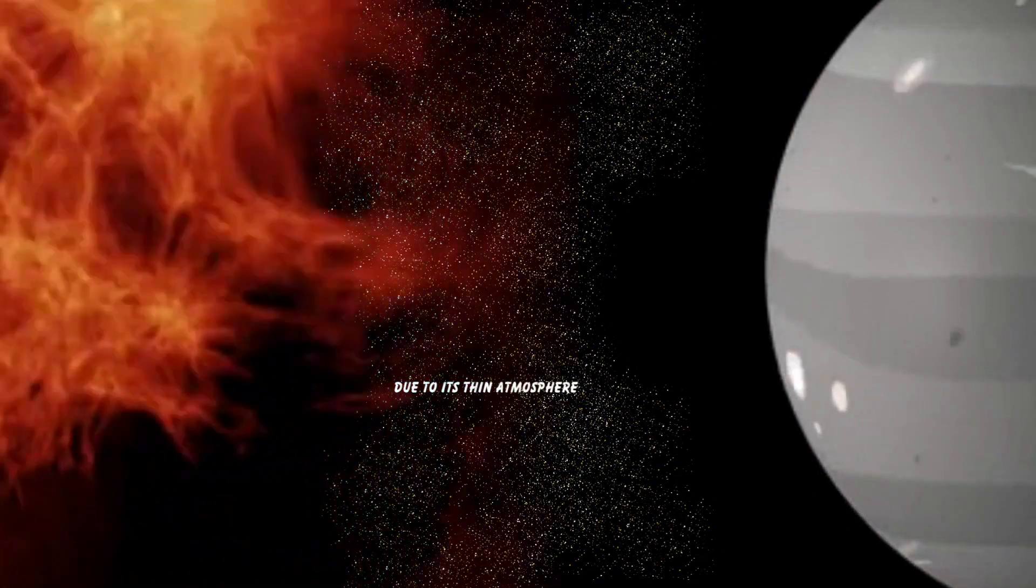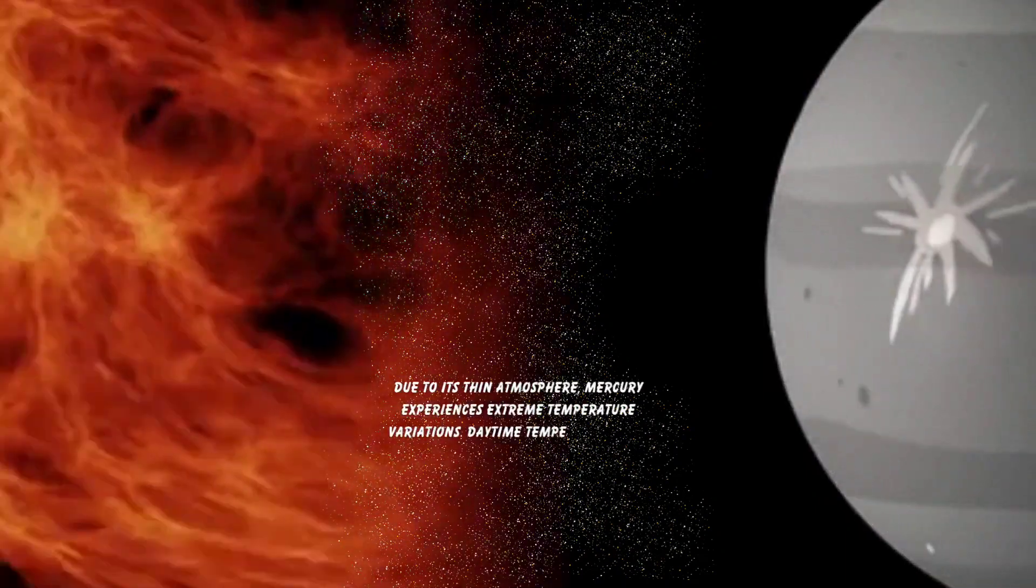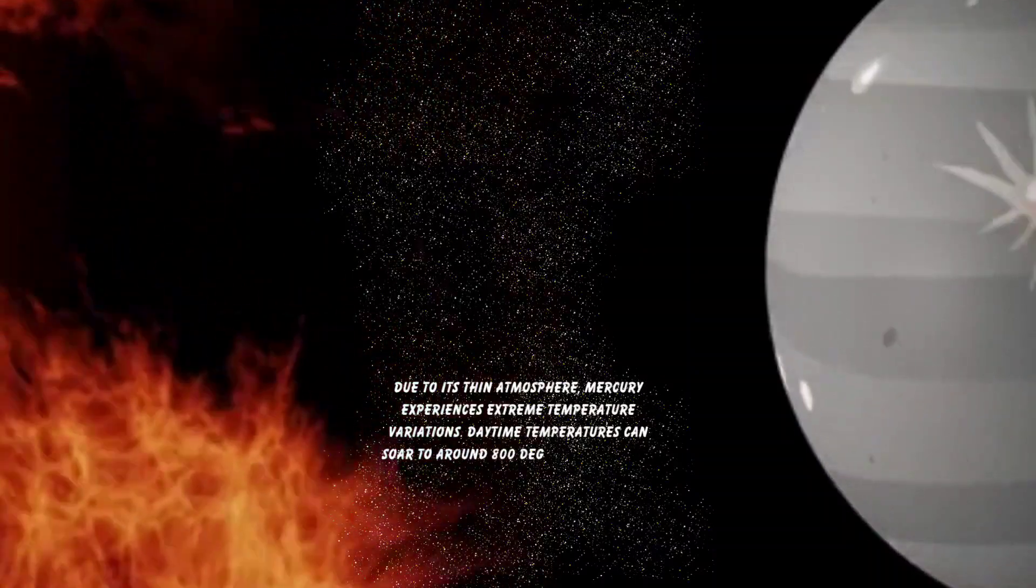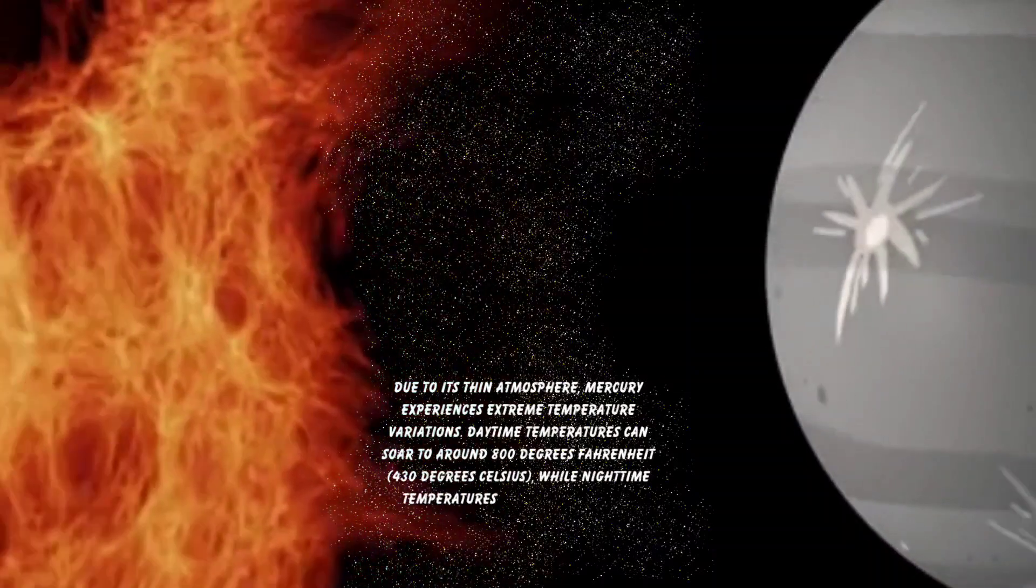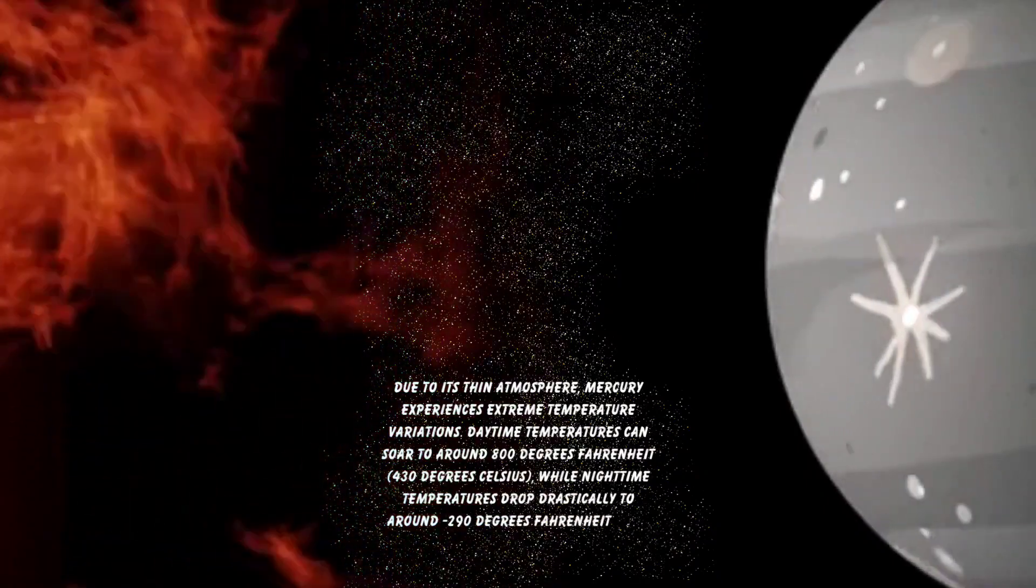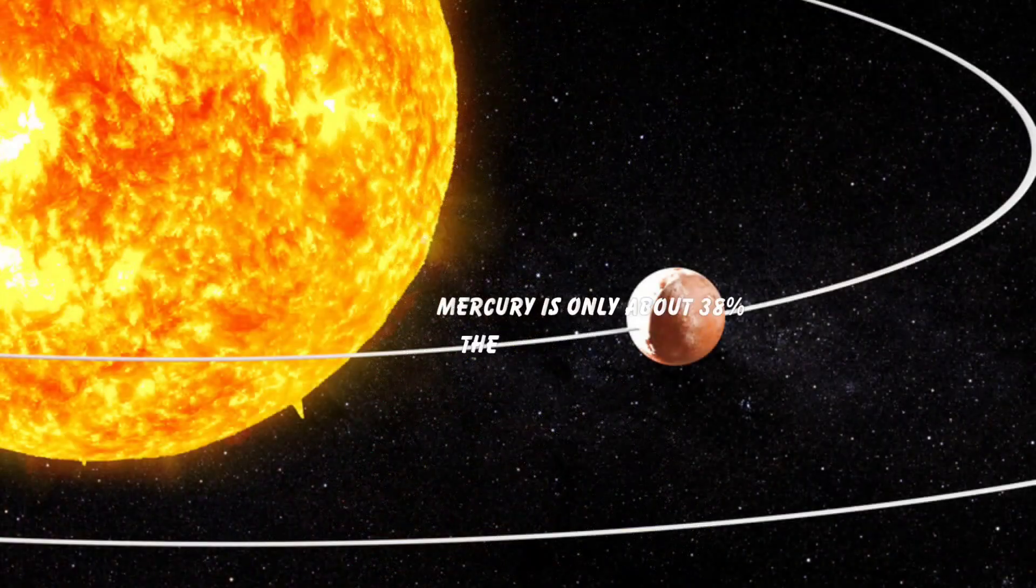Due to its thin atmosphere, Mercury experiences extreme temperature variations. Daytime temperatures can soar to around 800 degrees Fahrenheit (430 degrees Celsius), while nighttime temperatures drop drastically to around minus 290 degrees Fahrenheit (minus 180 degrees Celsius).